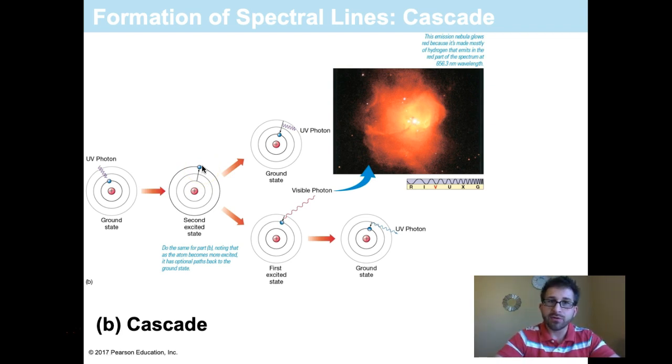And we could have two things then happen. We could either have it goes back all the way down to the ground state, which emits that same wavelength of UV photon, just like before.